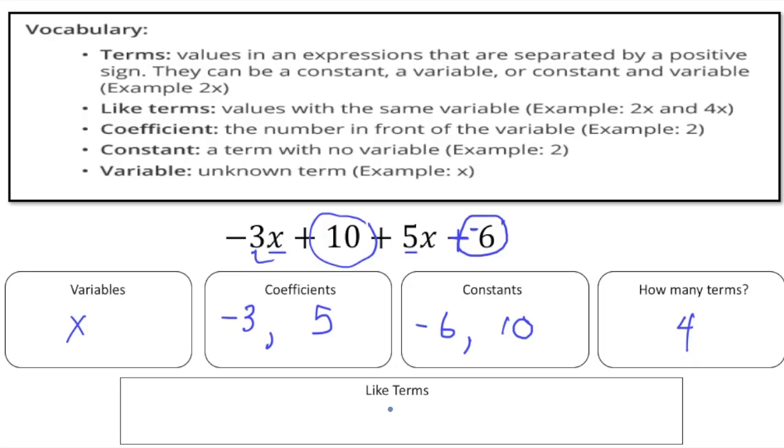Finally we need to talk about like terms. Now like terms are values with the same variable. So here we could add negative 3x and also 5x. Those are like terms. But you can also add constants. So the negative 6 and the 10, those are also like terms.